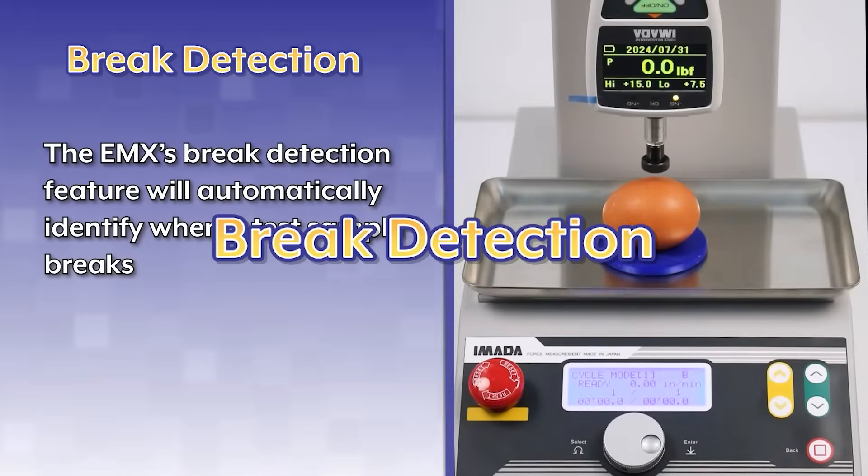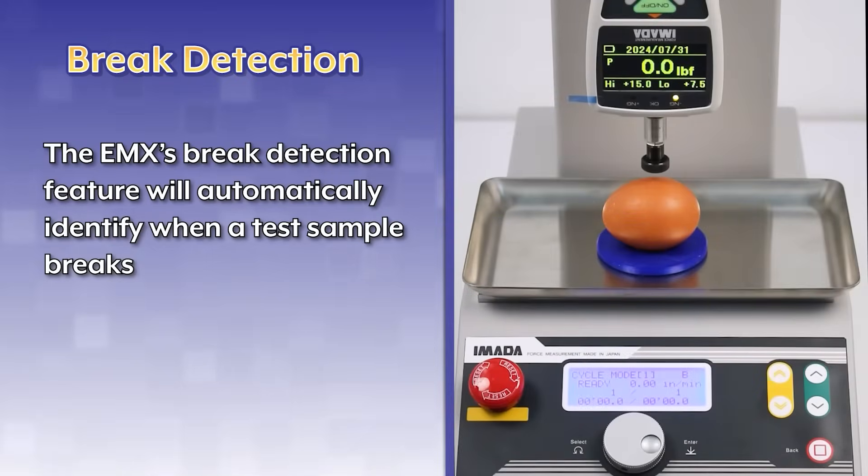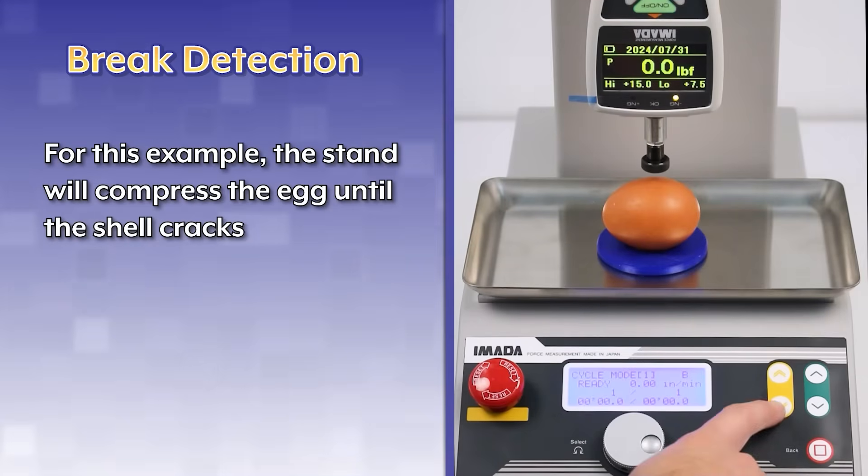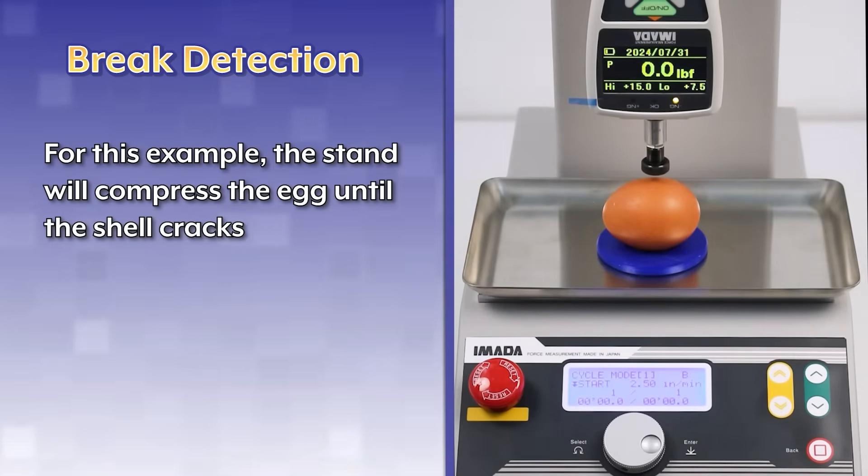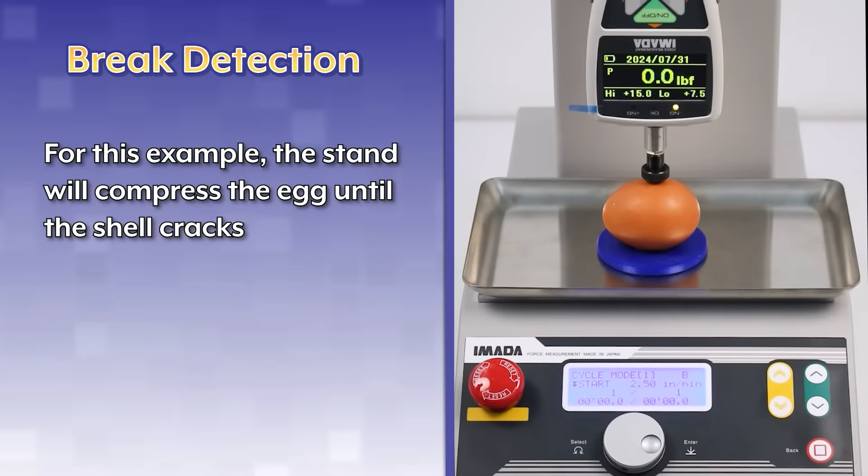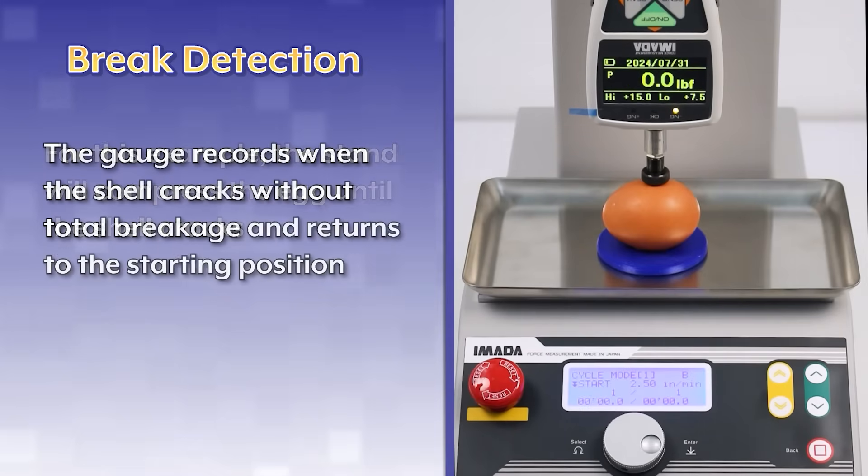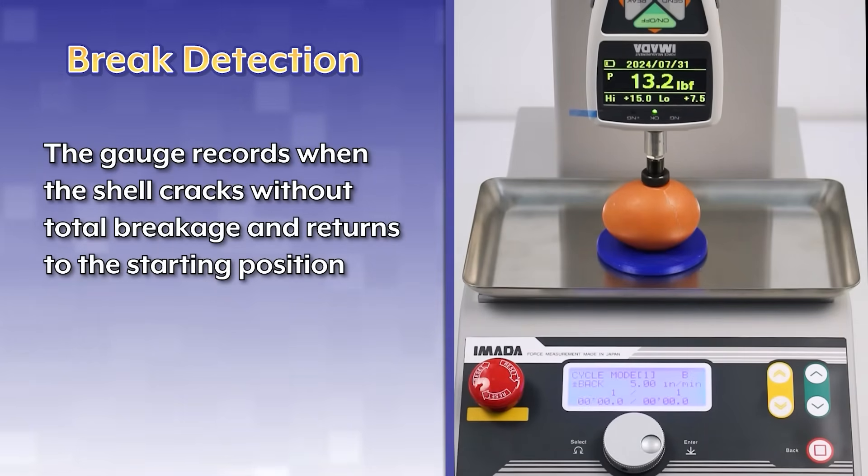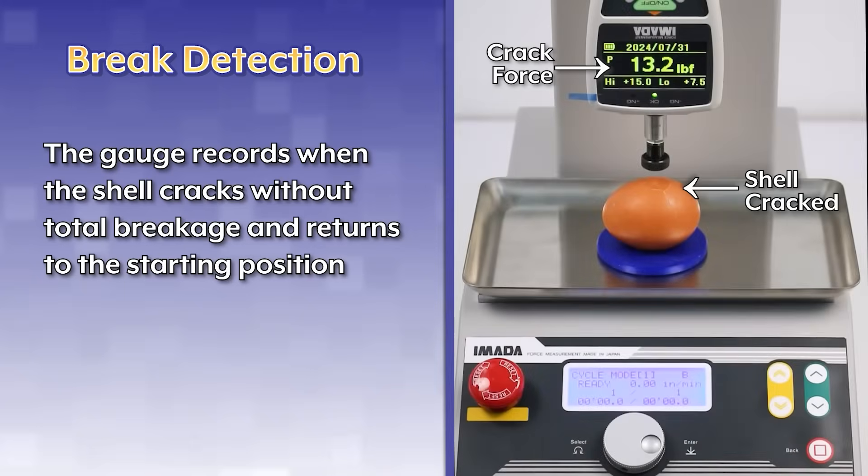The EMX's break detection feature will automatically identify when a test sample breaks. For this example, the stand will compress the egg until the shell cracks. The gauge records when the shell cracks without total breakage and returns to the starting position.